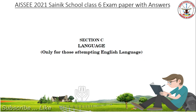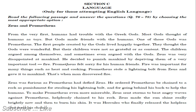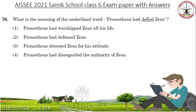Section C: Language — English. Pause the video and check this paragraph yourself. Try to understand while reading. In the exam paper, don't waste your time. What is the meaning of the underlined word? 'Prometheus had defied Gios.' Option C: Prometheus detested Gios for his attitude.